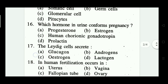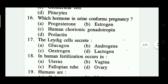Question number sixteen: which hormone in urine confirms pregnancy? Options: progesterone, estrogen, human chorionic gonadotropin, and prolactin. Which one is correct? Human chorionic gonadotropin — option C is the correct answer.